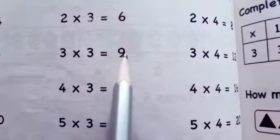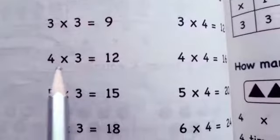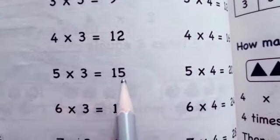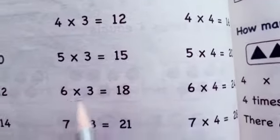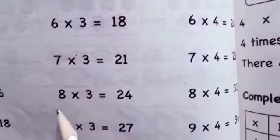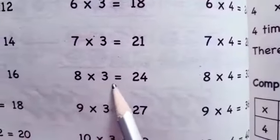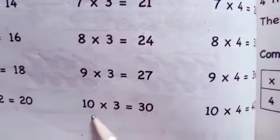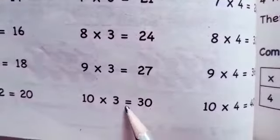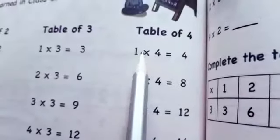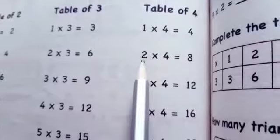Now we are going to revise the table of three. One time three is three, two times three is six, three times three is nine, four times three is twelve, five times three is fifteen, six times three is eighteen, seven times three is twenty one, eight times three is twenty four, nine times three is twenty seven, ten times three is thirty.